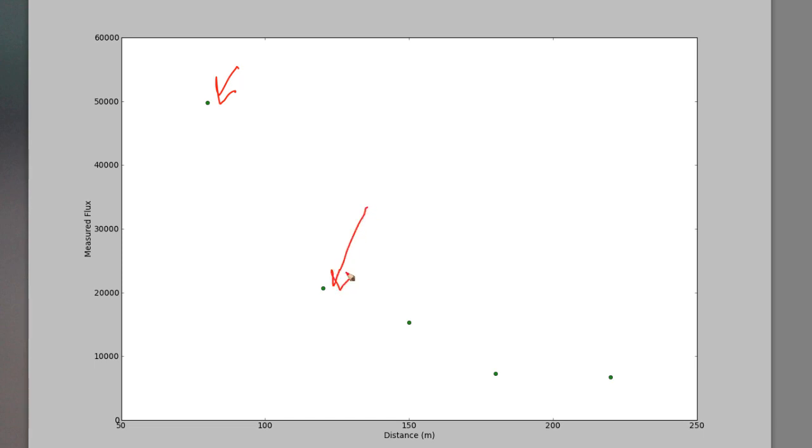then we see that the object's further away, but we measure fewer electrons on the detector, which means fewer photons were collected by the camera. And as we go further and further away, we see a pattern that the further away we are, the fainter the object appears in its measured flux.